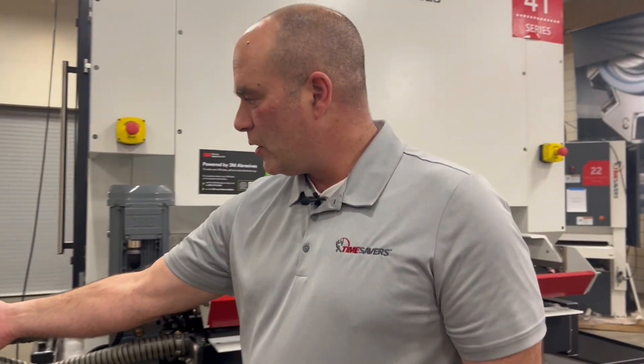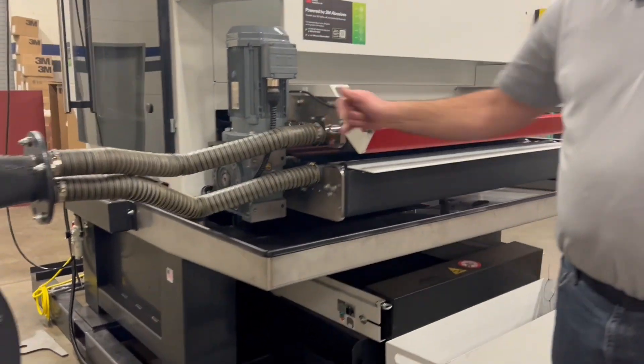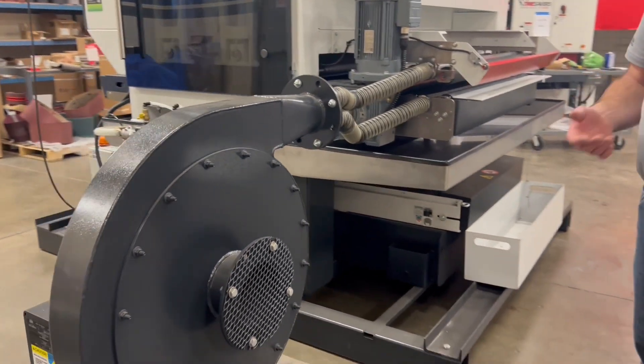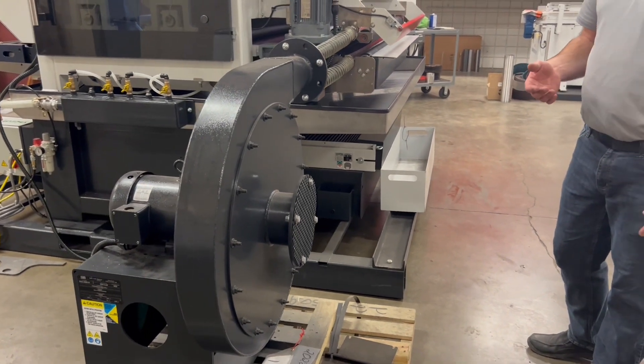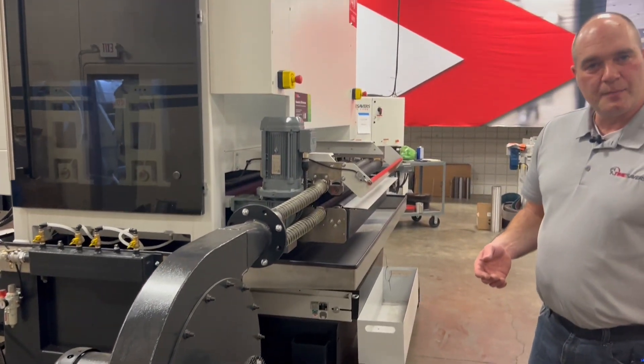Here is our standalone blower unit. This is for the air knife dryer itself. A couple flex ducts here connected to the machine and that's what keeps your parts dry.